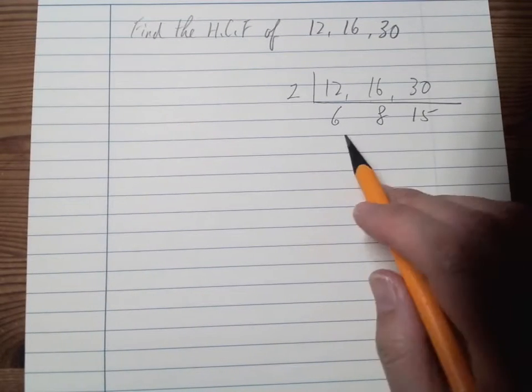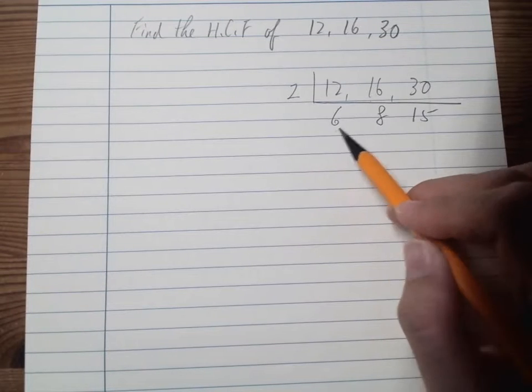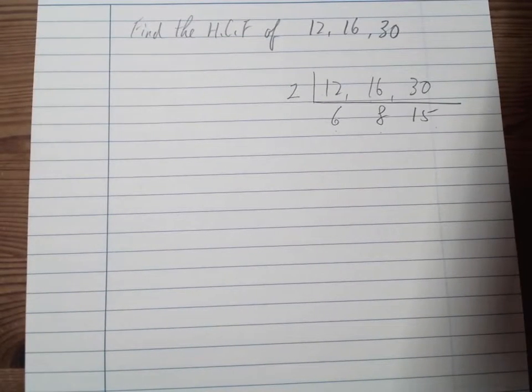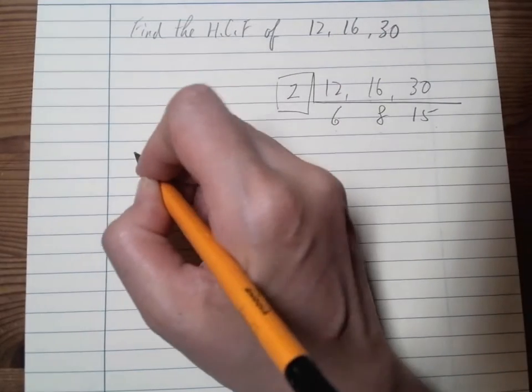Then although there's a 2 we can divide 6 and 8 by 2, but then it cannot be divided by 15. So I got to stop right there. Therefore, the HCF is only 2.